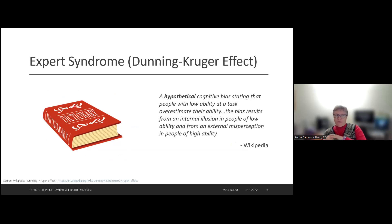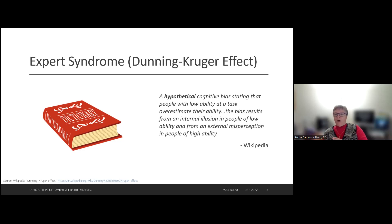Dunning and Kruger were two researchers who studied why people felt they were experts. Based on Wikipedia, expert syndrome is a hypothetical cognitive bias stating that people with low ability at a task overestimate their ability. The bias results from an internal illusion in people of low ability and from an external misperception in people of high ability. In other words, some people think they're an expert when they're not, and some people who don't think they're an expert really are.